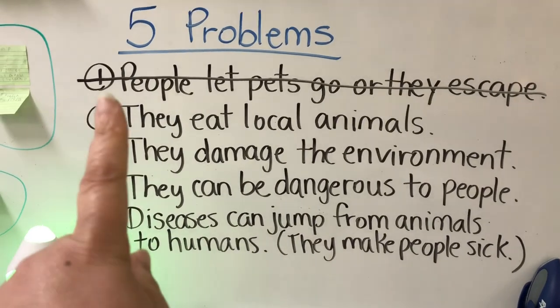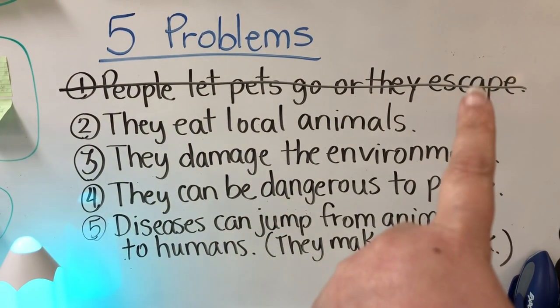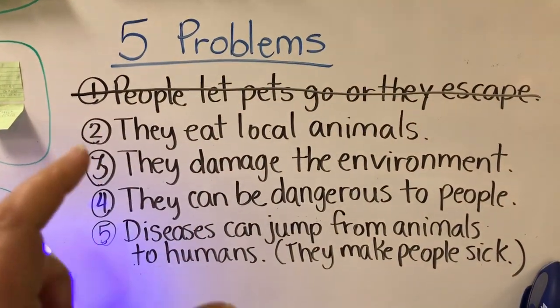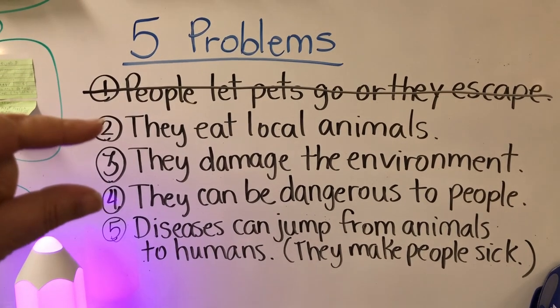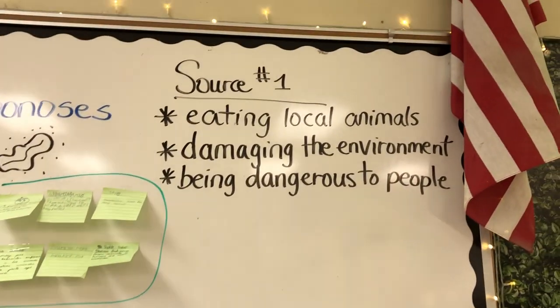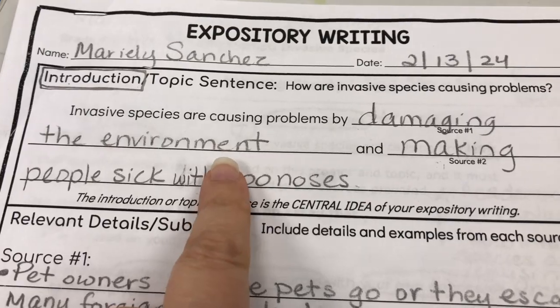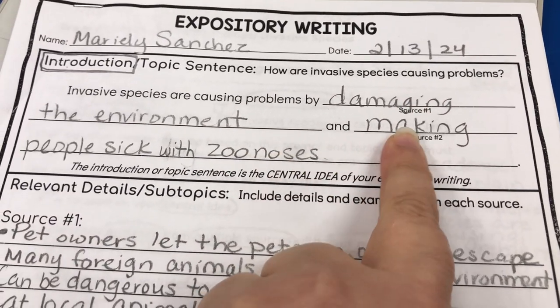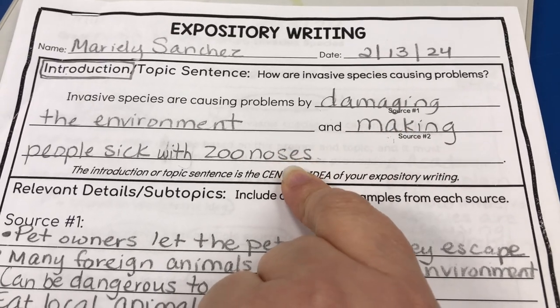We had five problems total, but I crossed out number one — people letting them go or escaping — because that's how invasive species become a problem, not a problem they themselves cause. Students used the remaining list to decide which problem to focus on in their planner. I used 'damaging the environment' as my source one example. Source two only talked about how they can make people sick through zoonotic disease, so everyone used that one for source two.